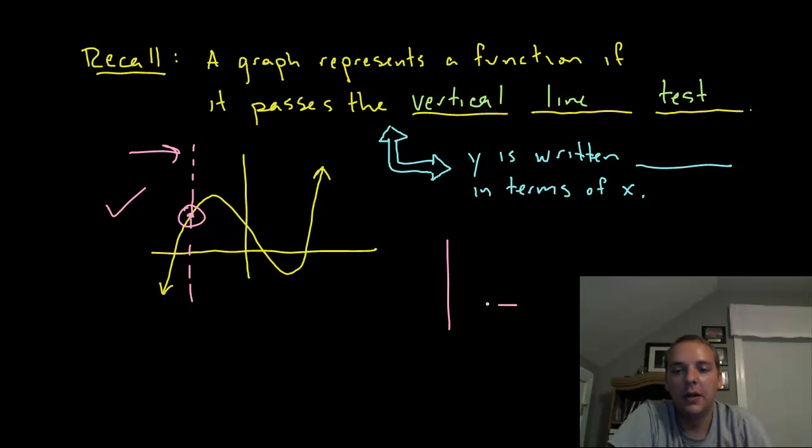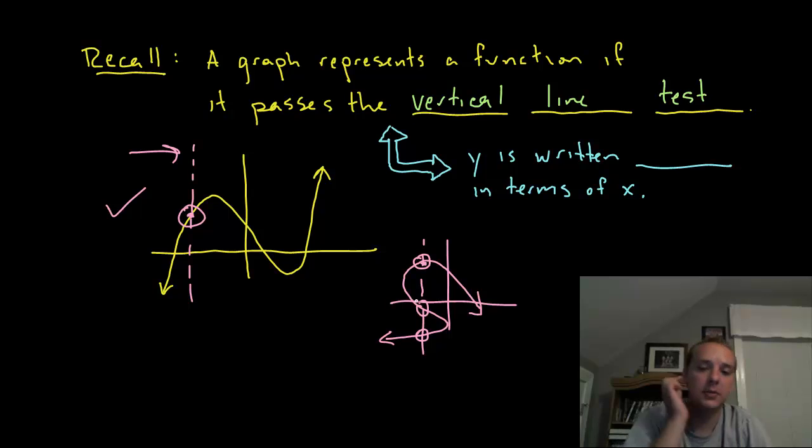Something that would not be a function would be something kind of like this. You see at some point it crosses not once but two times, but three times. So that would not be a function.